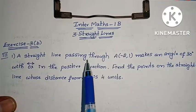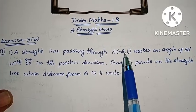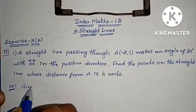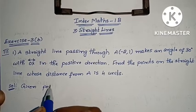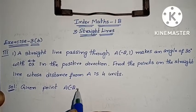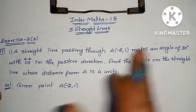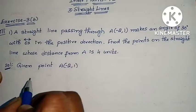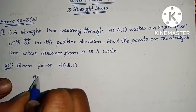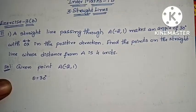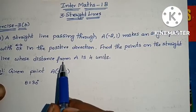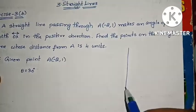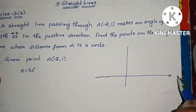The question: a straight line passes through point A, which is the given point A = (-2, 1). It makes an angle of 30 degrees with the OX on the positive direction. So theta equals 30 degrees. Find the point on this straight line whose distance from A is 4 units. The problem solution is very easy.